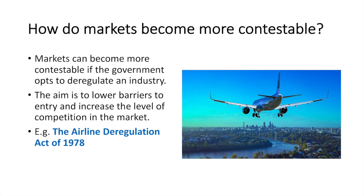Governments may choose to make markets more contestable by deregulating an industry. This should decrease the barriers to entry to the industry and increase the level of actual and potential competition in the industry. In 1978, the passing of the airline deregulation law removed a lot of government restrictions on fares, routes, and the entry of new competitors. This had the effect of increasing the level of contestability in the American airline market.